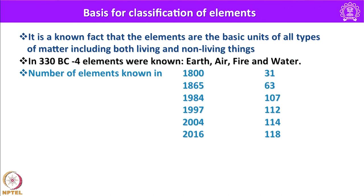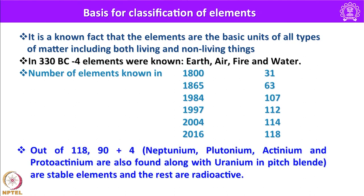In 1997 another 5 elements were added to make it 112. In 2004, 114 elements were known, and in 2016 all 118 elements were known and named. Out of these 118 elements, 90 elements plus 4 others — neptunium, plutonium, actinium and protactinium — are found along with uranium as trace elements in pitchblende. So 94 elements are essentially naturally occurring, and the remaining are radioactive or manmade elements.